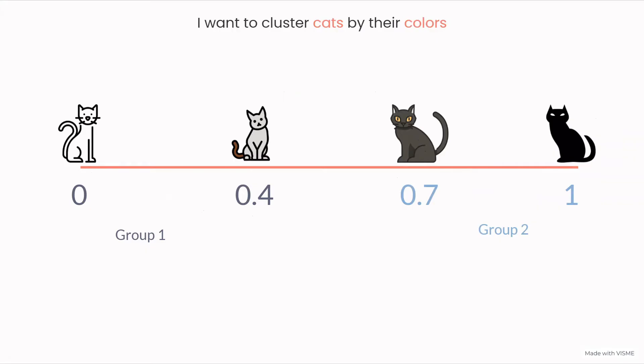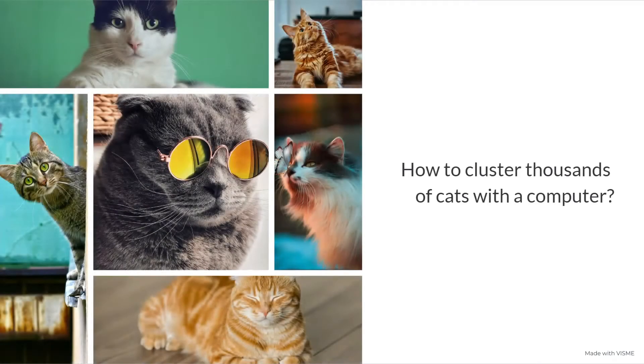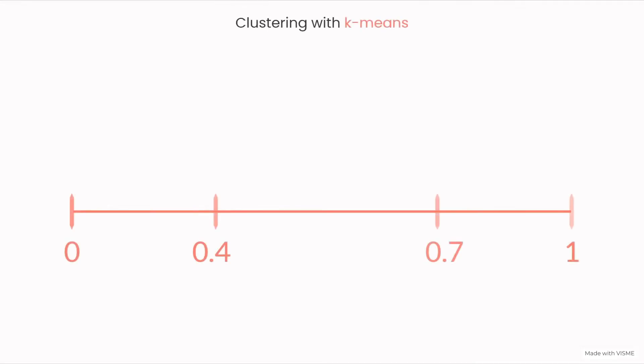But maybe you don't have so few cats. Maybe you have thousands of cats at your home and you need a computer to make a classification, a clusterization of them for you. The most well-known clustering algorithm is the k-means. I'm going to actually review it here.